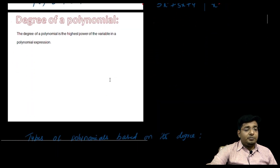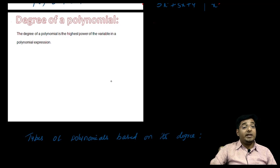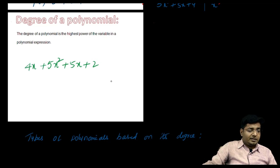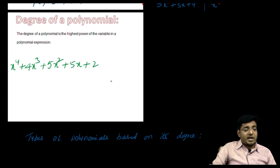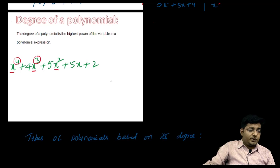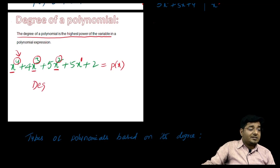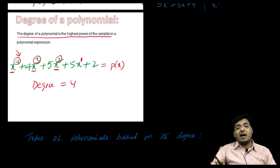Now let us learn how to find the degree of a polynomial. We are going to learn about polynomials in one variable. Consider the polynomial x to the power 4 plus 4x cubed plus 5x squared plus 5x plus 2. All variable powers are positive, so this is a polynomial. The degree of a polynomial is the highest power of the variable. The highest power here is 4, so the degree of this polynomial is 4.